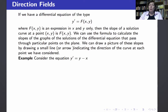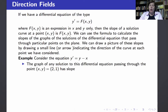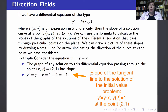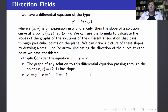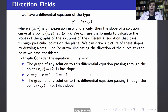For example, suppose we take the equation y prime equals y minus x. For any given x and y in the plane — for example, x equals 2, y equals 1 — we can calculate the slope of a solution to this differential equation passing through that point. Namely, it's y minus x, or 1 minus 2, so it's minus 1. So any solution to the differential equation passing through this point has a tangent line with slope negative 1.